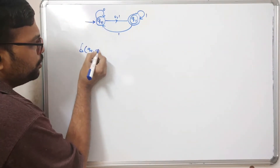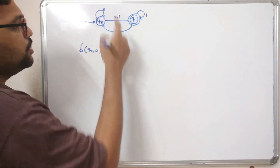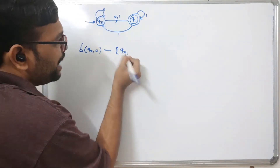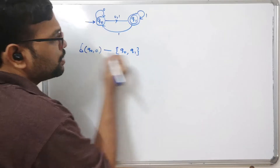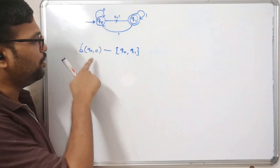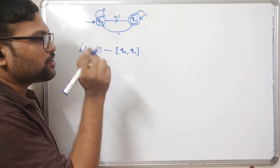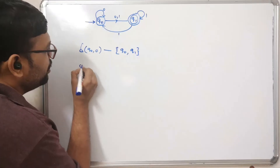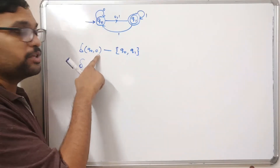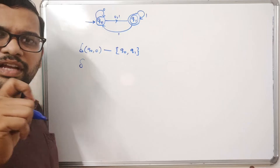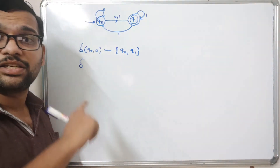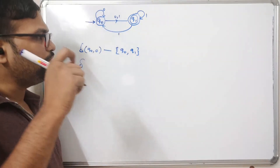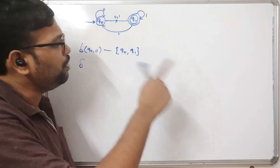So q0 on zero — it will move to q0 as well as q1. This is the transition of q0 over zero. Consider this as another state. We also have to find out the transition for input symbol one, because in DFA every state should have a transition over every input symbol of the alphabet. Here the alphabet is zero and one, so for every state there should be a transition for zero and one.